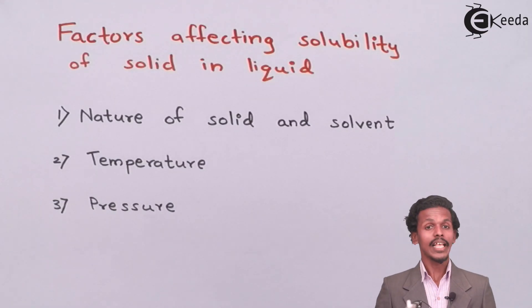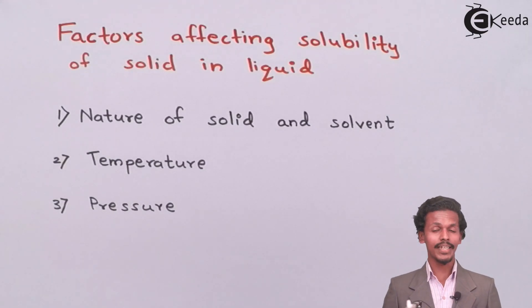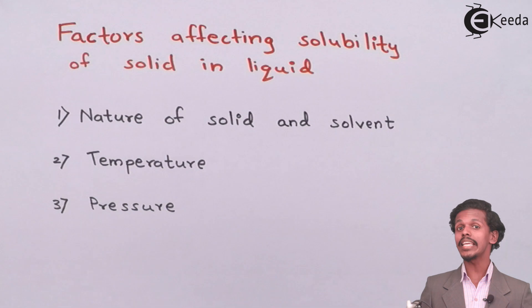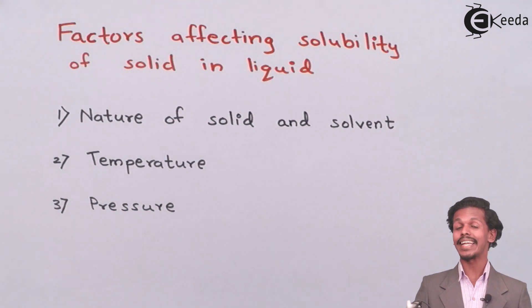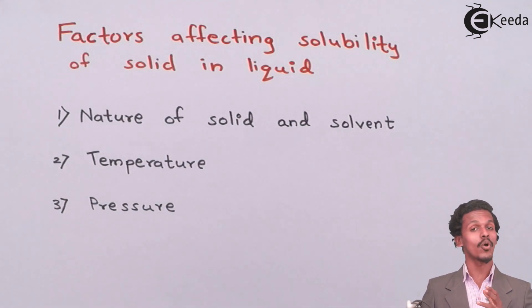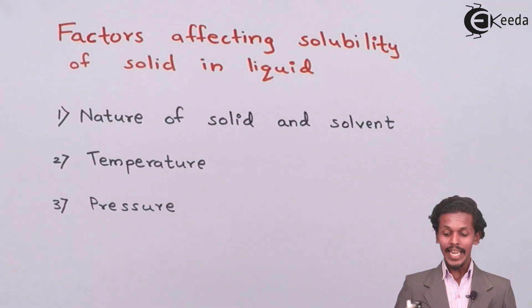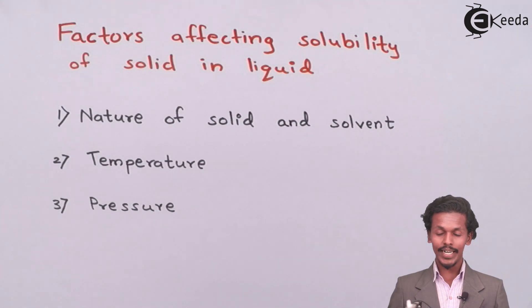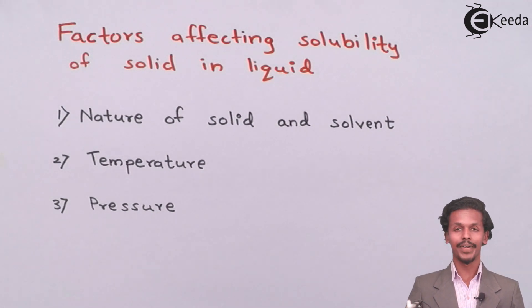As you can see on your screen, there are three main factors that can affect the solubility of a solid in liquid. The first one is the nature of the solid and solvent.